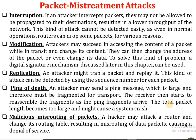Examples of packet mistreatment include: interruption, where an attacker intercepts packets and prevents them from reaching their destination, reducing network throughput — this is hard to detect since normal routers also drop packets for unknown destinations; and modification, where the attacker modifies packet contents, changing the destination address, source address, or actual data. Digital signatures are used to solve modification attacks.